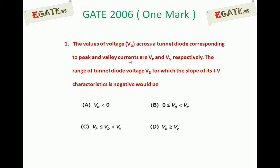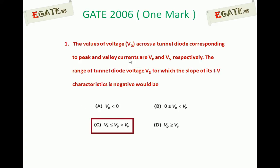Here, voltage across the tunnel diode is indicated as Vd. The question asks for the range of Vd so that its IV characteristics exhibit negative resistance — that is, where the slope of its IV characteristics is negative. The correct answer for this one is C: if the tunnel diode voltage is between peak voltage and valley voltage, that is where it gets the negative resistance region, where the slope of the characteristics is negative.